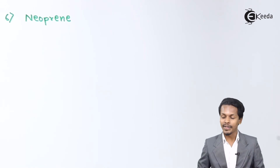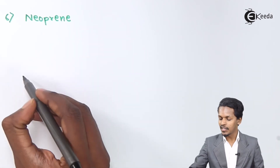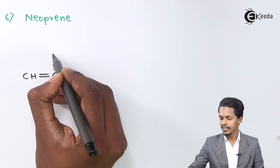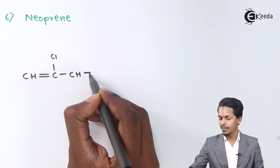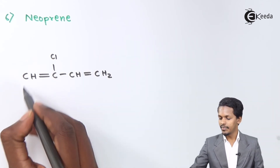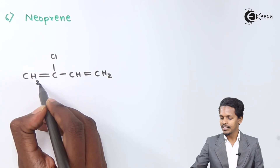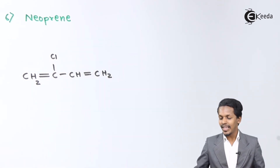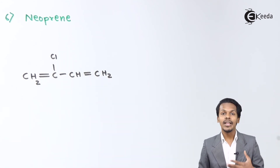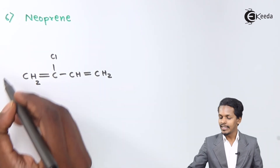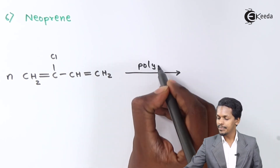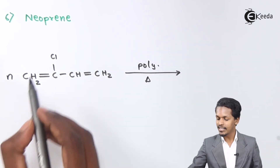Next is neoprene, which is an elastomer. The monomer for neoprene is CH2=C(Cl)–CH=CH2, whose IUPAC name is 2-chlorobuta-1,3-diene (chloroprene). We use n moles of this monomer, and after the polymerization process we obtain the repeating unit.